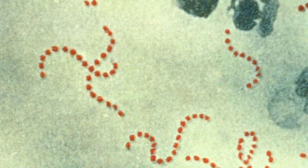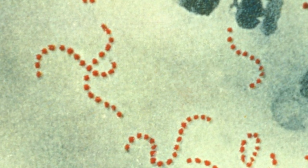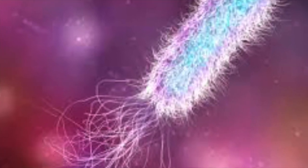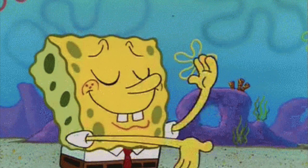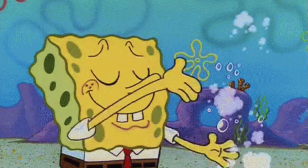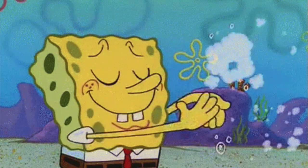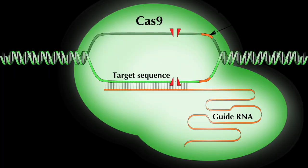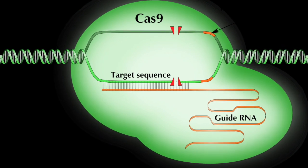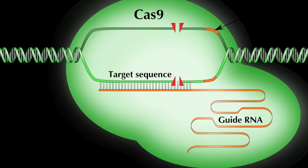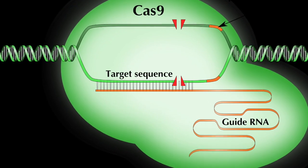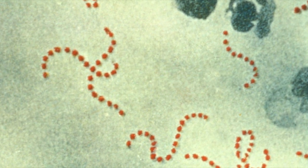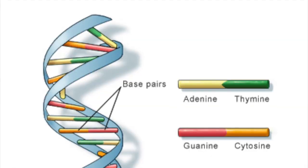Streptococcus pyogenes is a species of gram-positive aerotolerant bacterium in the genus Streptococcus. Now that that complicated sentence is out of the way, we can talk about how CAS9 and its parts work.